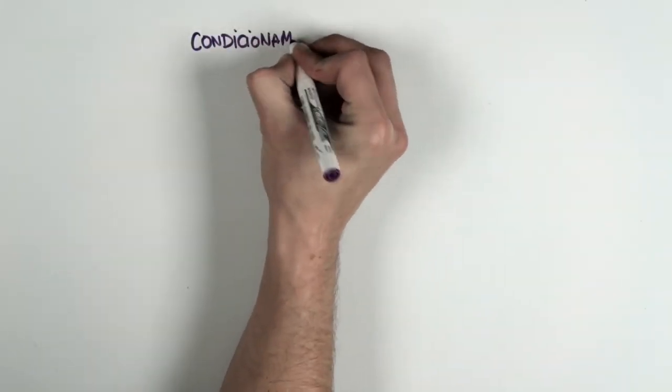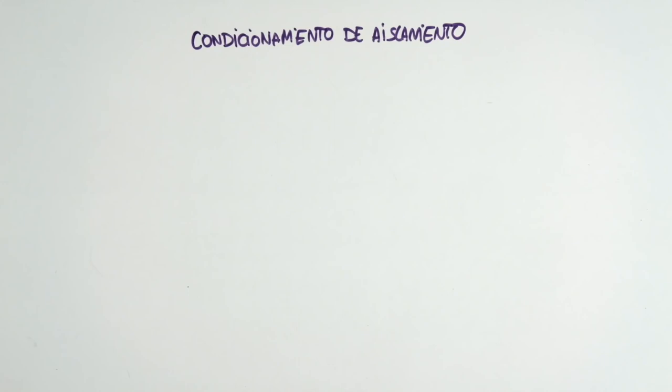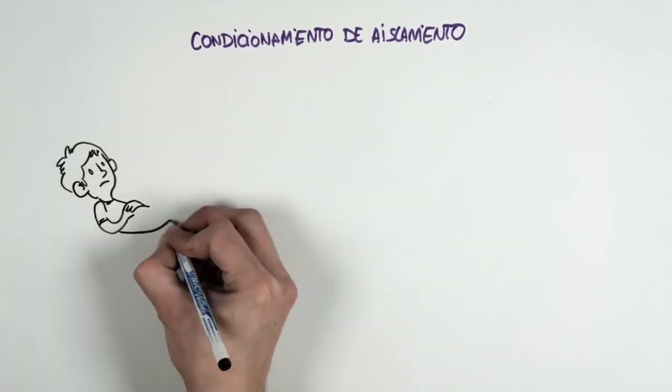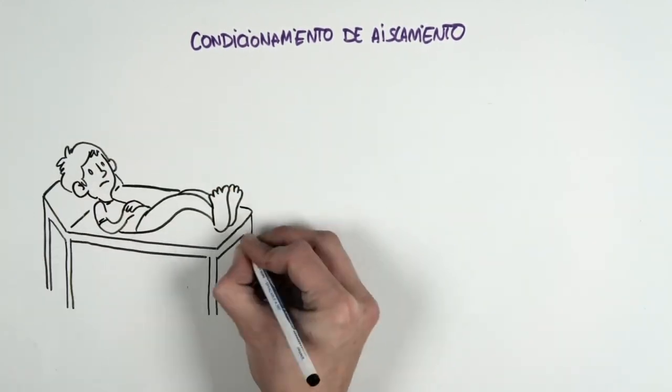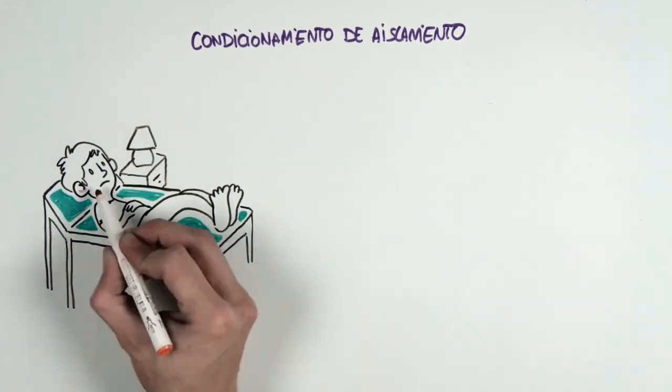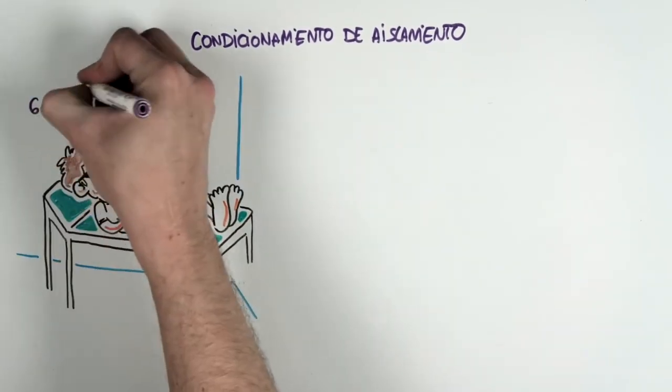There are three types of conditioning that are carried out in the experiments. In the first, the volunteer lies down on a bed in a bright and isolated room. He wears dark glasses and gloves. He stays this way for two to six days.